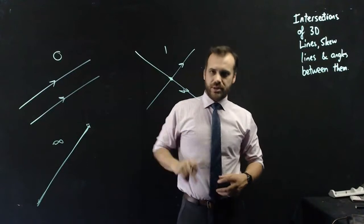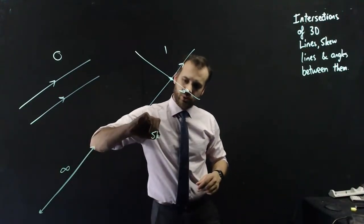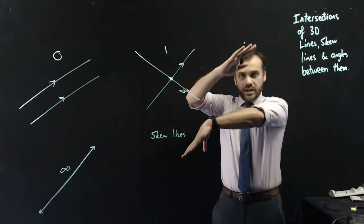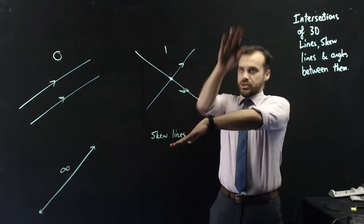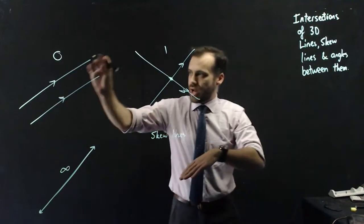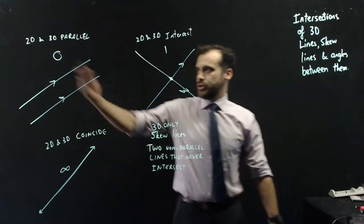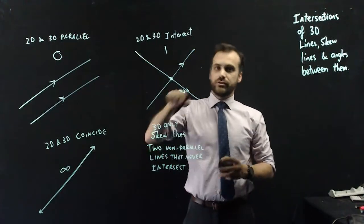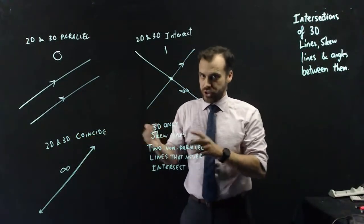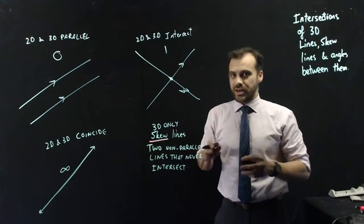But what happens if you're in three-dimensional space? In 3D, you have a fourth option called skew lines — a line and another line that never touch but are not parallel. One's going one way and the other's going another way, and because we're in 3D there's more freedom, so two non-parallel lines can still never touch. To summarise: 2D and 3D lines can both be parallel, intersect at a single point, or coincide. Only 3D lines can be skew — two non-parallel lines that never intersect.